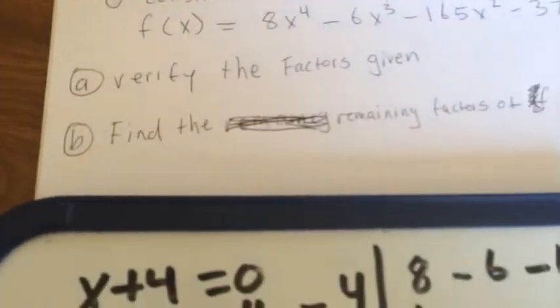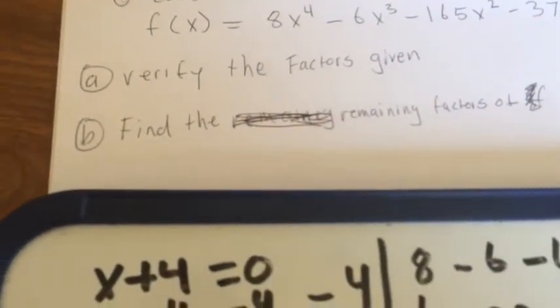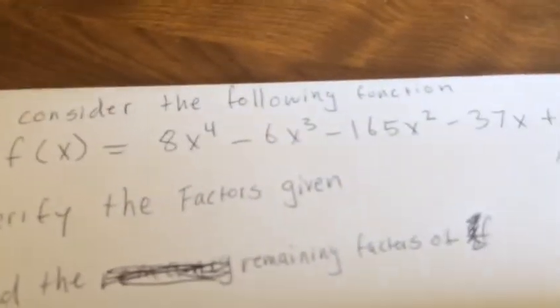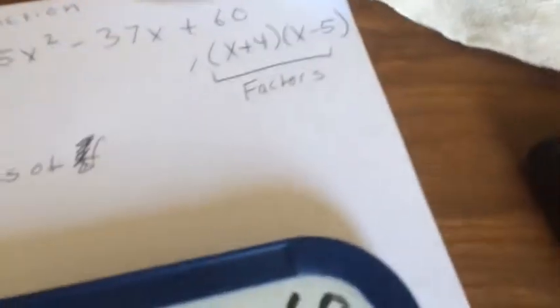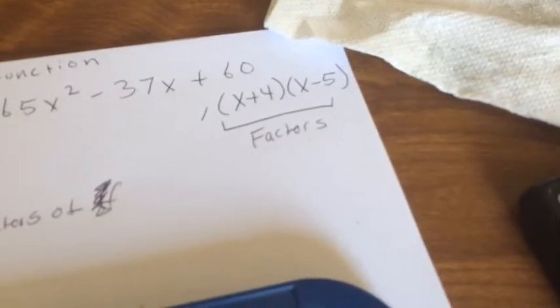The second part of the question says define the remaining factors of f. If you started from up here again with the original function, you would need to divide it by the negative 4.